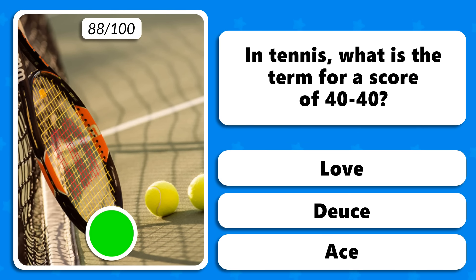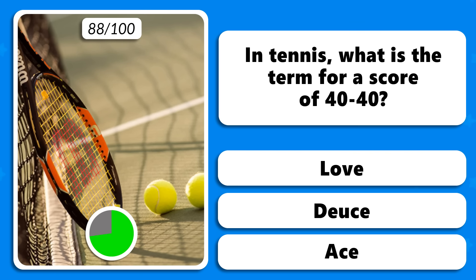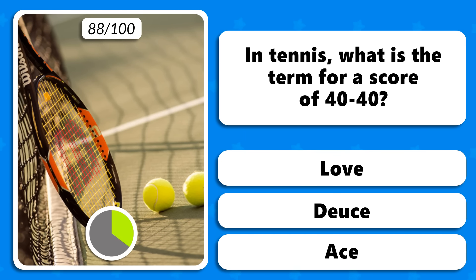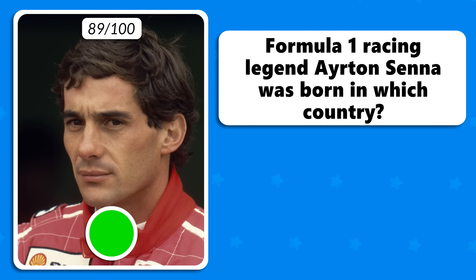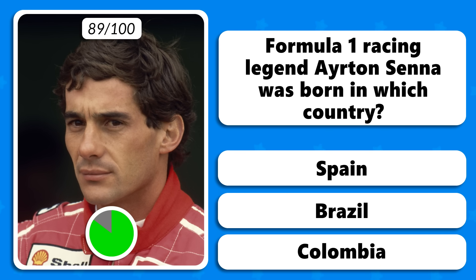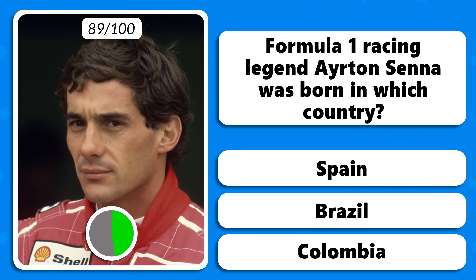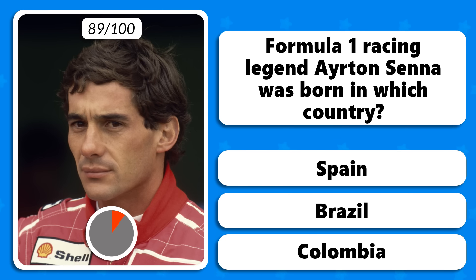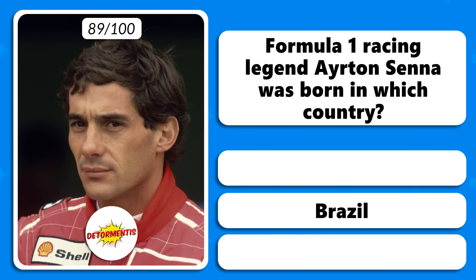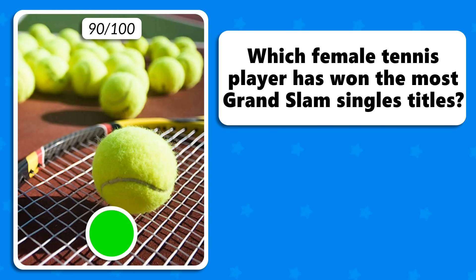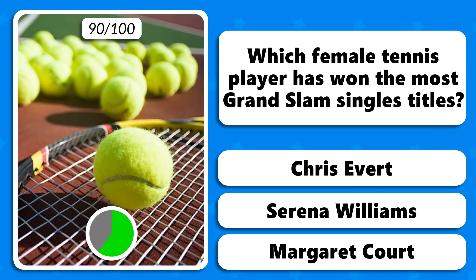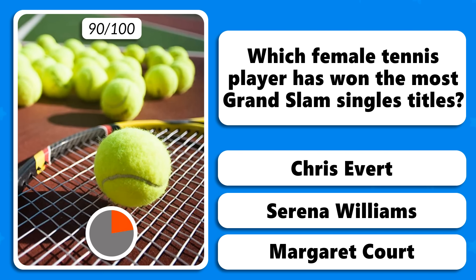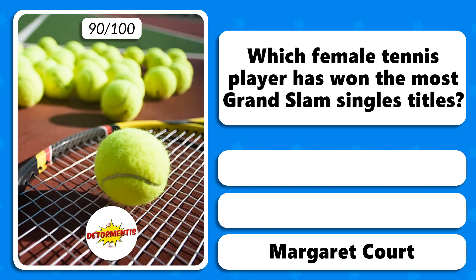In tennis, what is the term for a score of 40-40 — is it love, deuce or ace? It's called deuce. Formula 1 racing legend Ayrton Senna was born in which country — Spain, Brazil or Colombia? He was Brazilian. Which female tennis player has won the most Grand Slam singles titles — Chris Evert, Serena Williams or Margaret Court? Australia's Margaret Court.